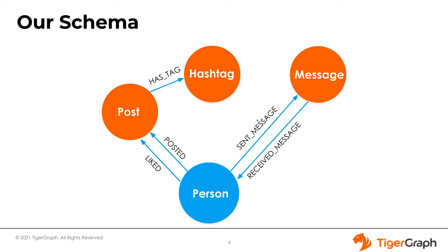Now let's take a look at the graph we'll be creating. We're going to make a simple graph to show how to use TigerGraph and the Graph Studio interface - representing a basic social media application. We have four nodes and five edges that connect them. Our first node is the person node, the user of our social media, which will contain information like their name, email address, and when they joined.